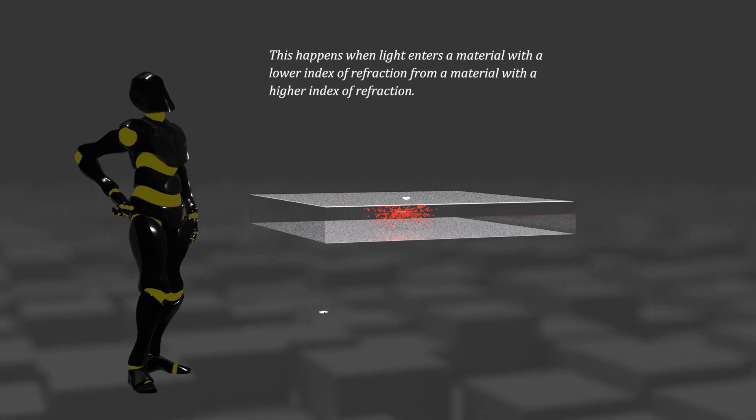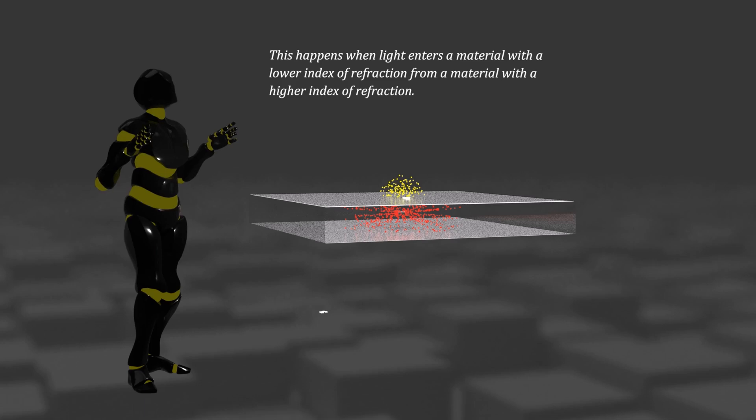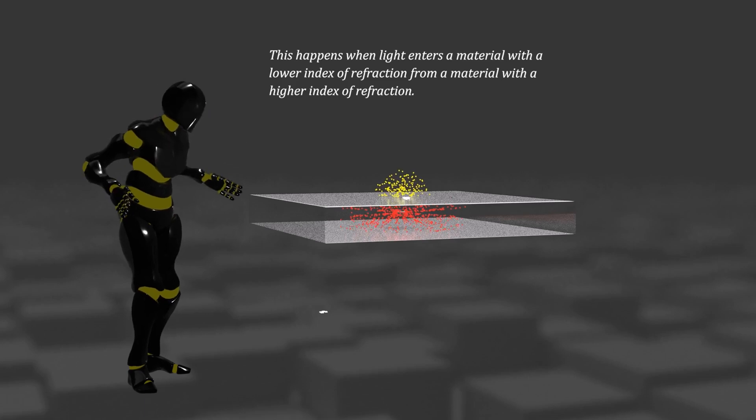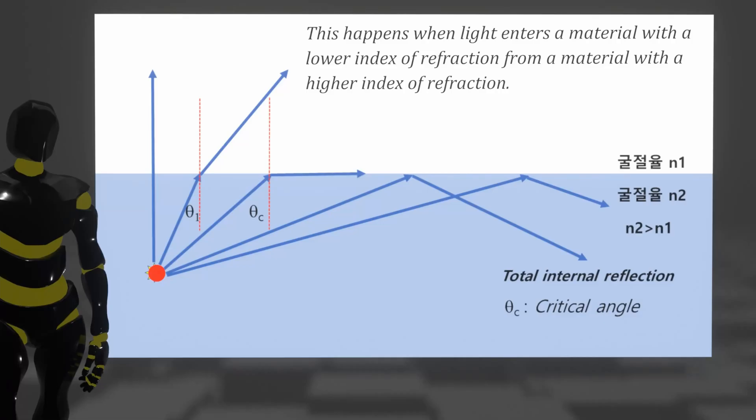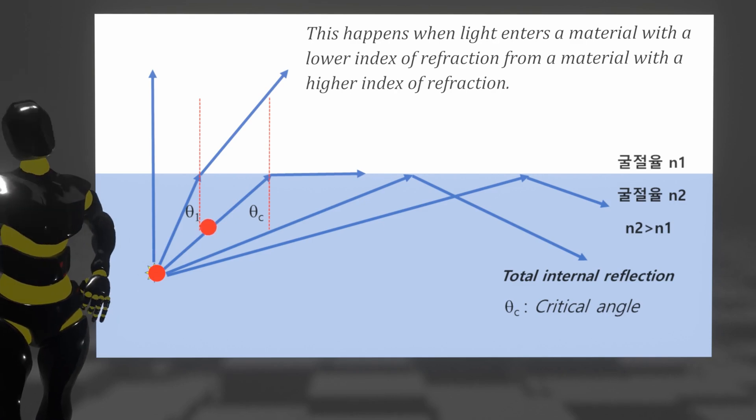Among the various refraction phenomena, let's try to remember what happens when light travels from a material with a high refractive index to a material with a low refractive index. The reason is the difference between the refractive index of where the light is generated and the refractive index of the layer of air that the light encounters as it exits.